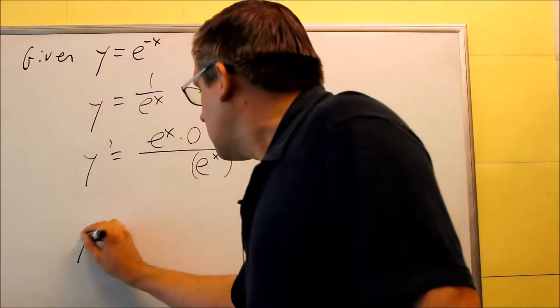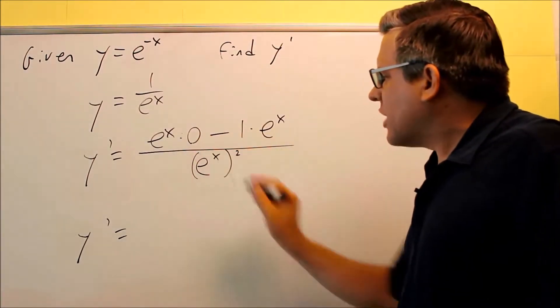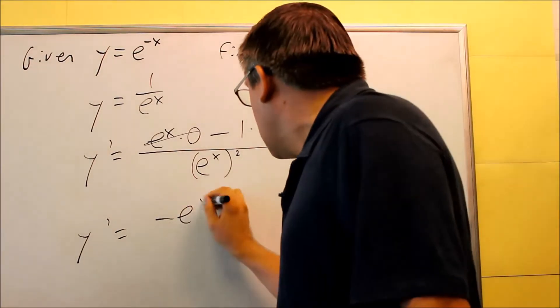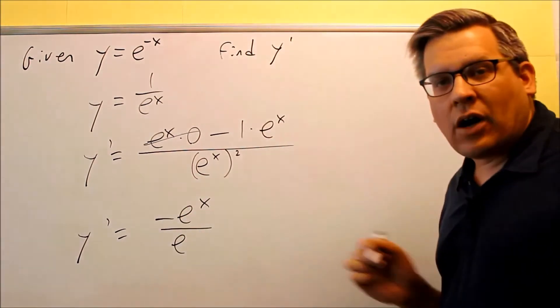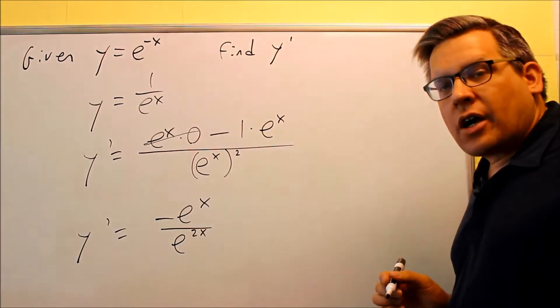We're going to simplify this. Okay, so on top, this part cancels out, so we don't have that. And then we have a minus e to the x. On the bottom, you have a power raised to another power, so your rules of exponents tell us that's going to be 2x.